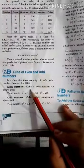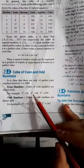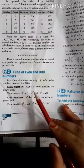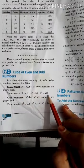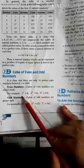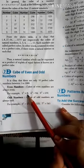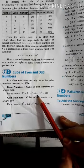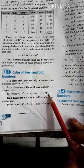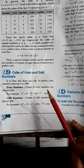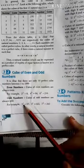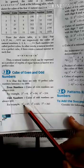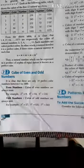Now: cube of even and odd numbers. Even numbers — if we take a cube of an even number, then the last unit digit is also an even number. For example, 2 cubed is 8 — even. 4 cubed is 64 — last digit 4, even. 6 cubed is 216 — last digit 6, even. Similarly, if we take the cube of an odd number, the last unit digit will also be odd.